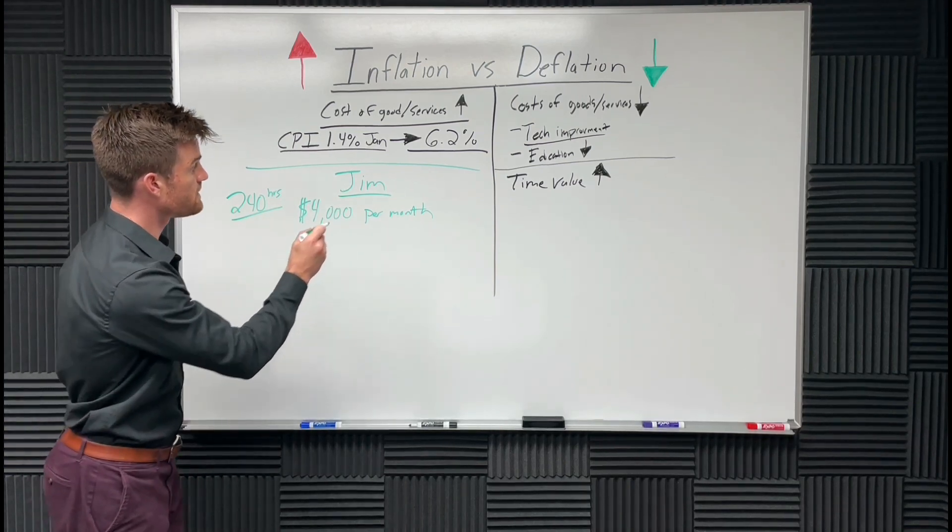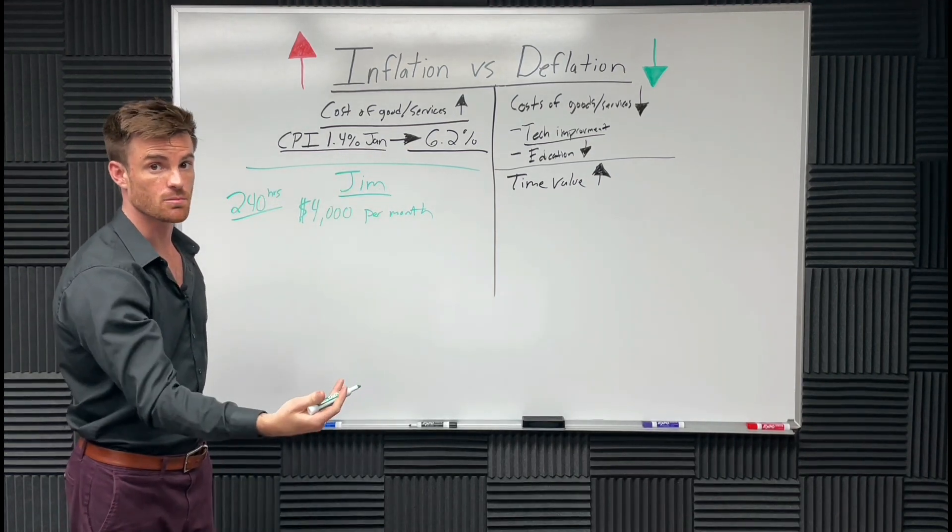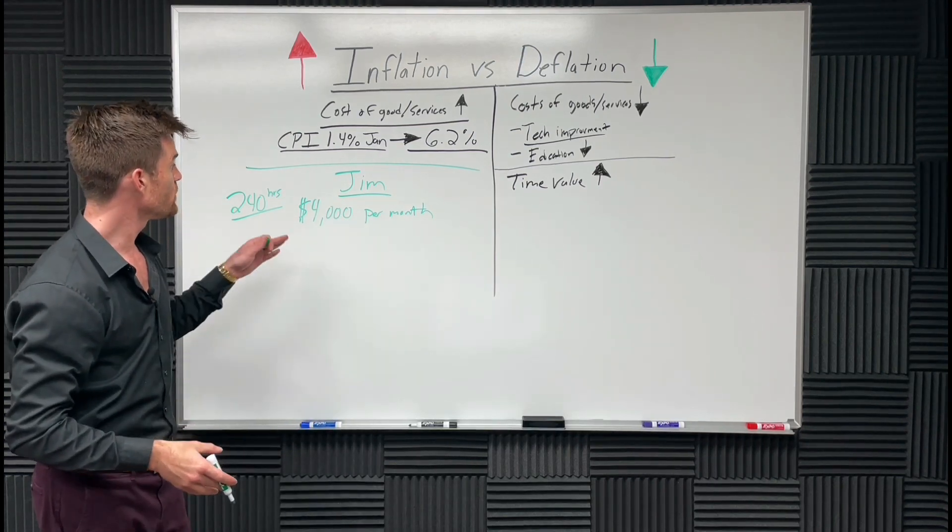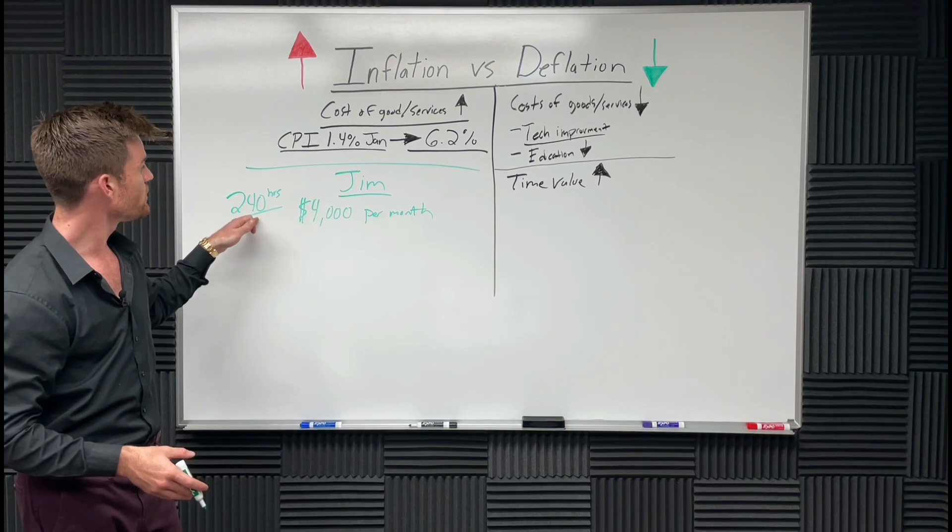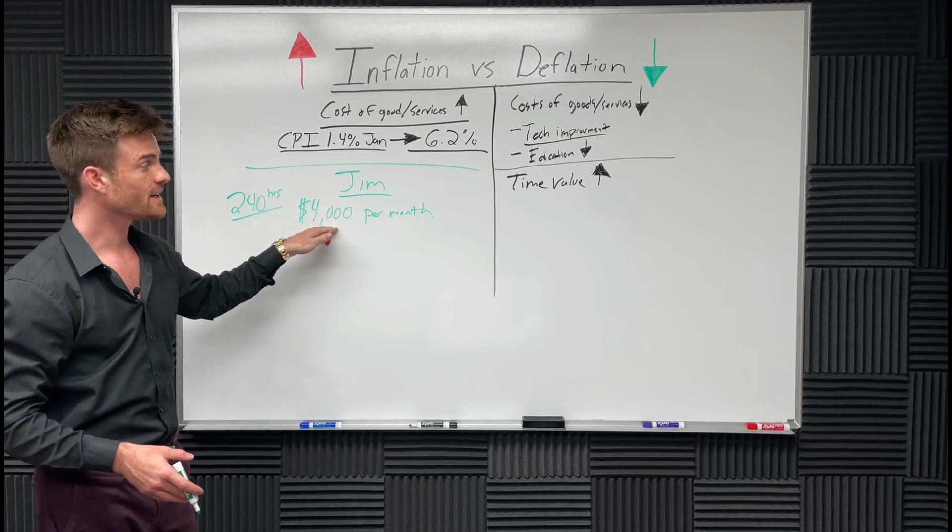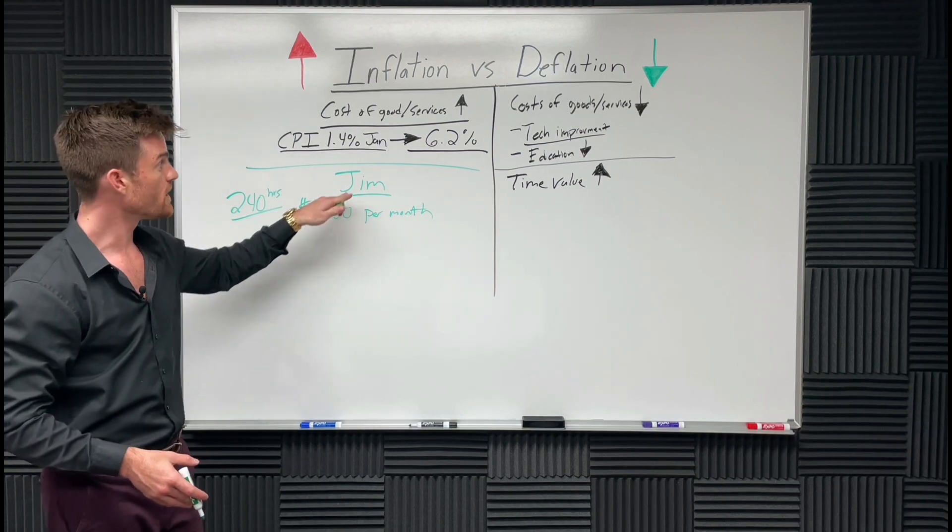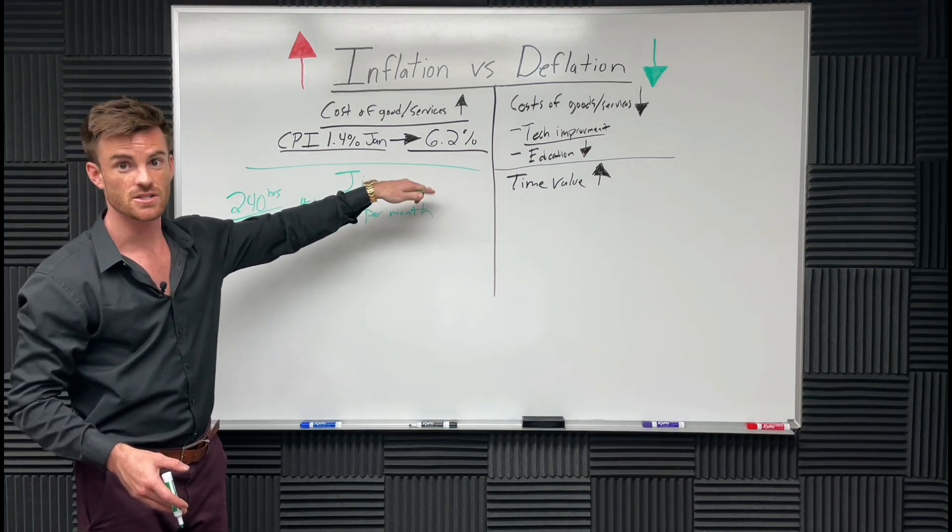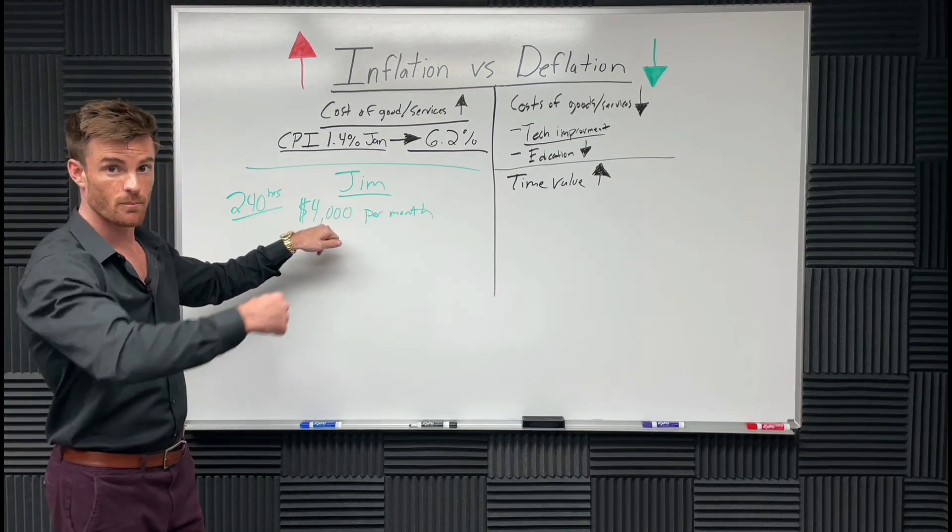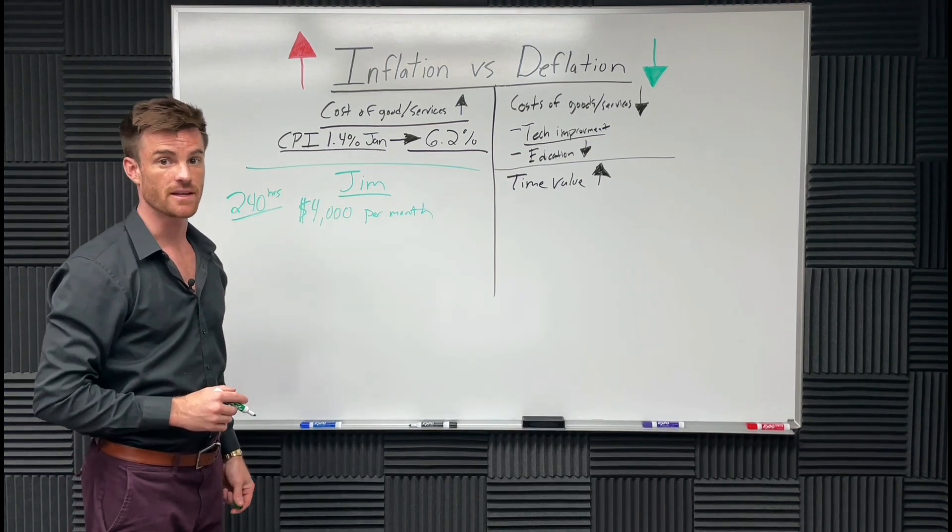Once you realize that this number is going up based off of a government overprinting the monetary supply and messing with things, with quantitative easing and all that, when you realize you gave up 240 hours per month to make $4,000, you're not getting paid in gold and silver. You're not getting paid in Bitcoin. You're getting paid in USD that is going up. Inflation is going up on it, so it's being wildly diluted. Do you think wages are going up because of this? Rarely. I think as a whole, wages might actually be deflationary.